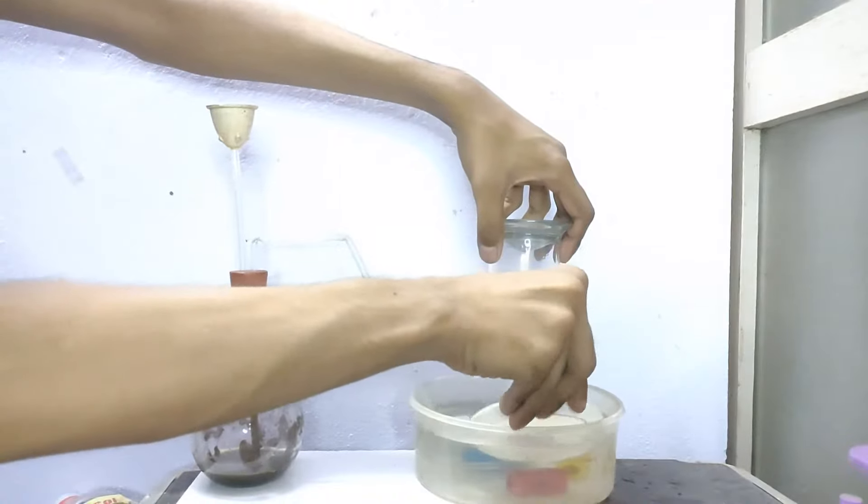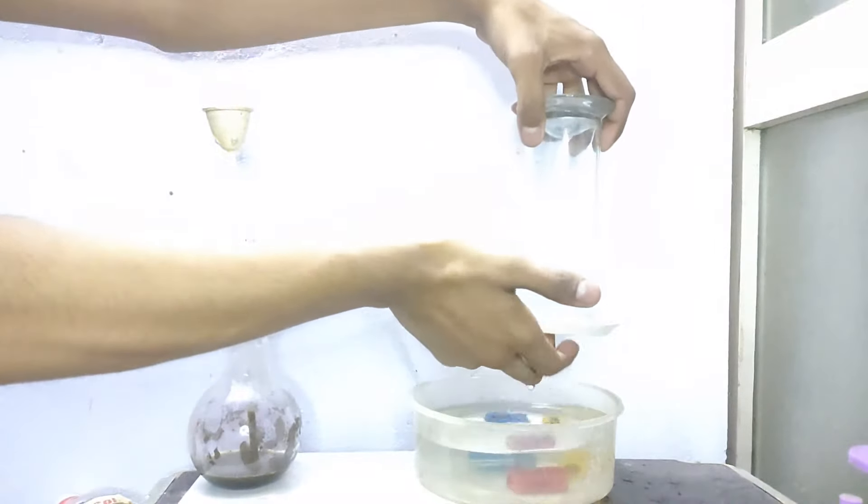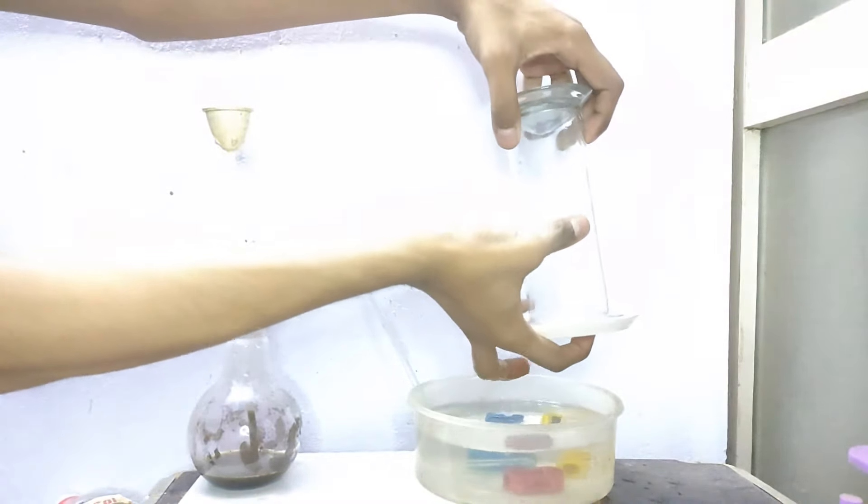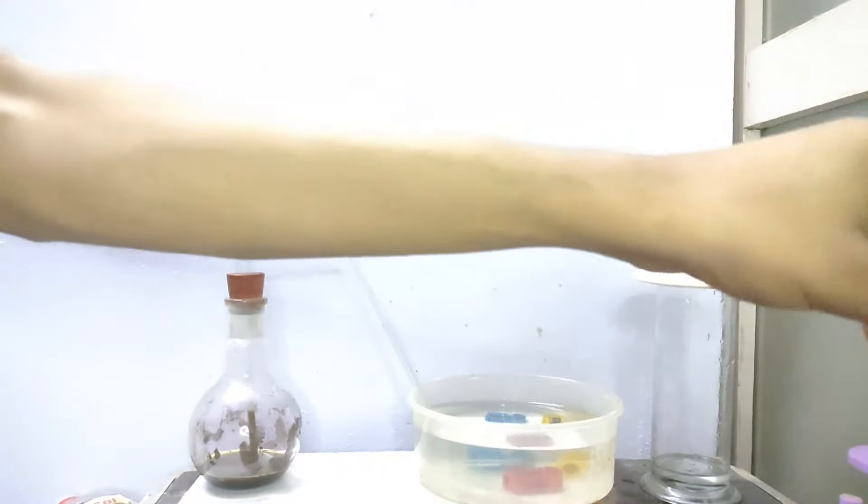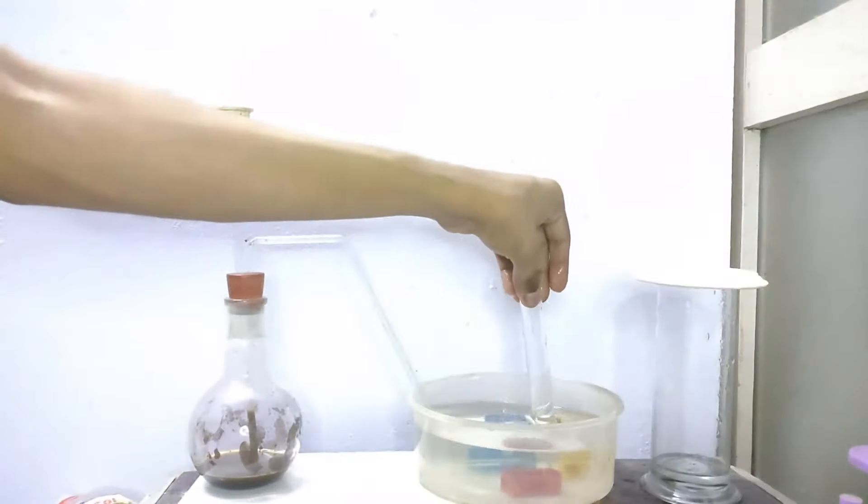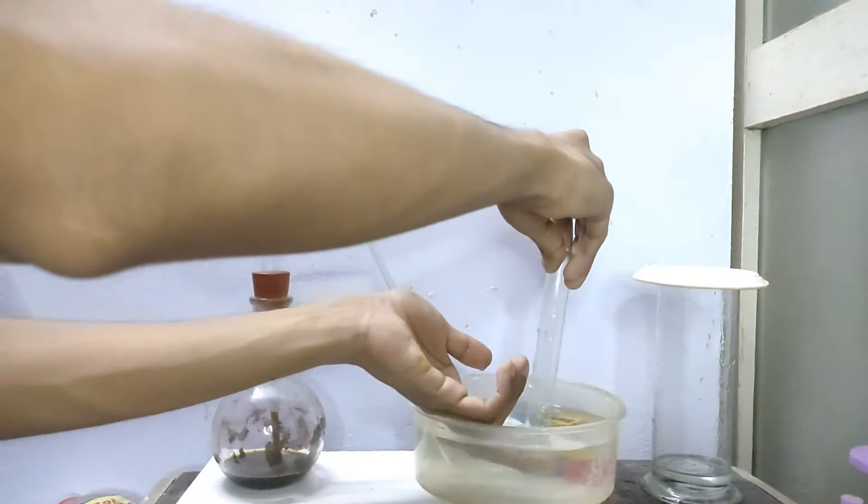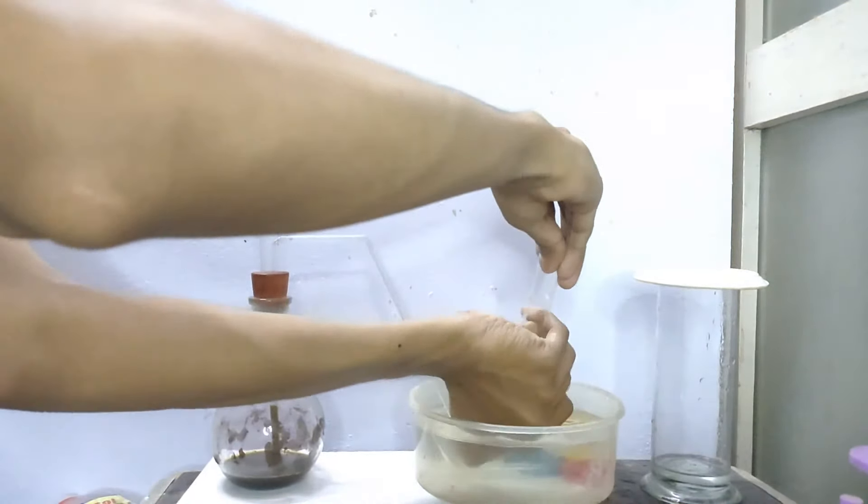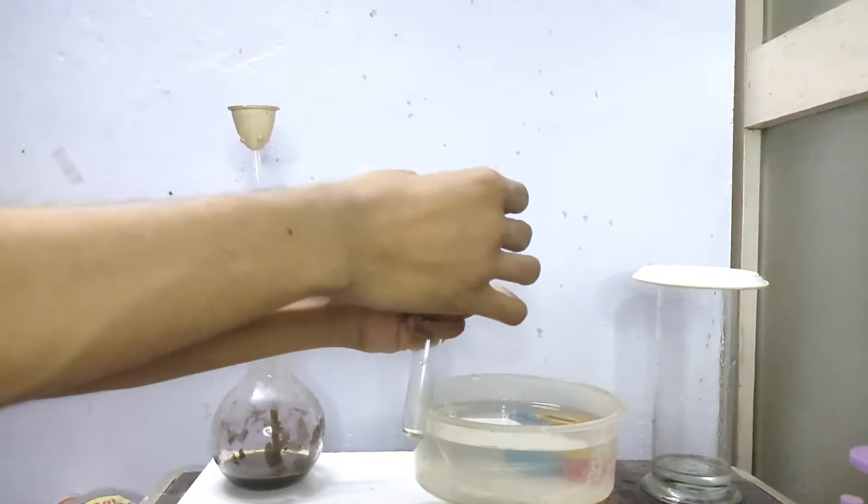So now our gas jar is full and I will take out the gas jar with the lid so that our oxygen does not escape out. And I am also filling a test tube with the oxygen gas. I will take out the test tube which has oxygen, cover it with the lid and then keep it aside for some time.